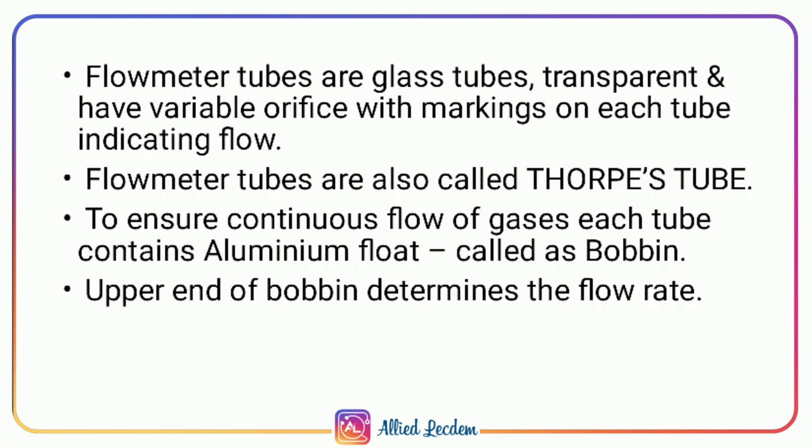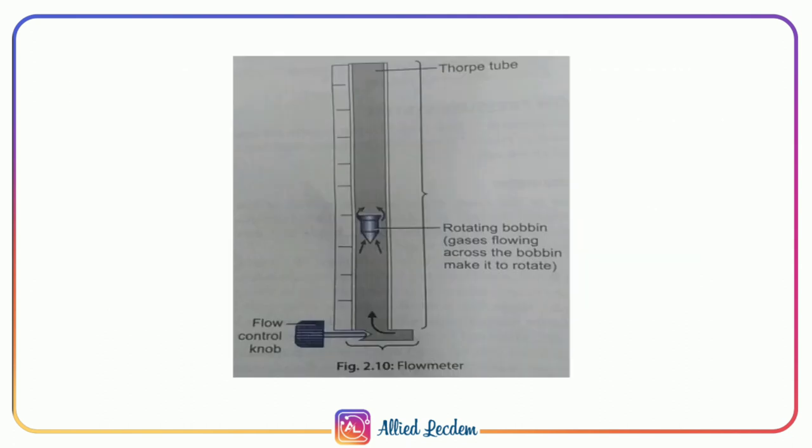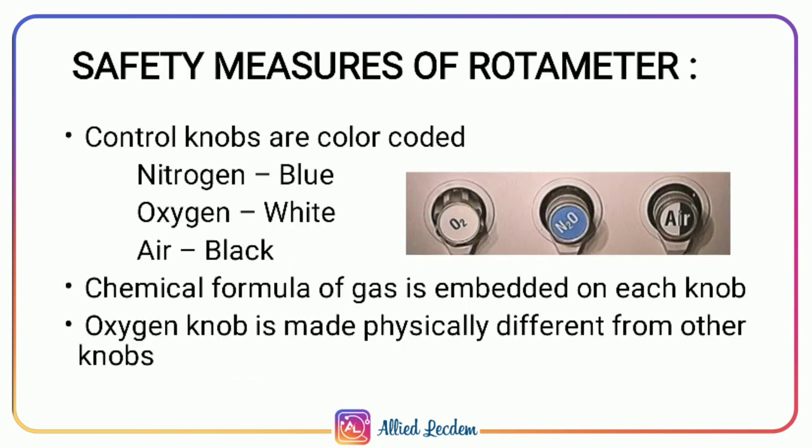The flowmeter tubes are glass transparent tubes with various markings indicating flow, also called Thorpe's tubes. To ensure continuous flow of gases, each tube contains bobbins made up of aluminium — the upper end of the bobbin determines the flow rate. When there is gas flow, the bobbin rotates and floats at the specific set level.